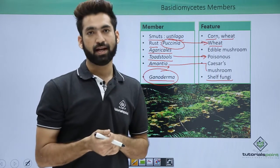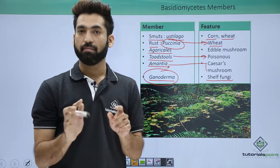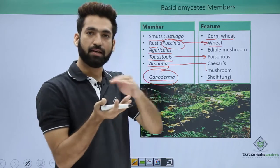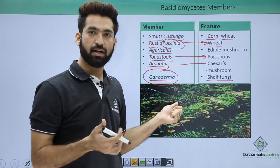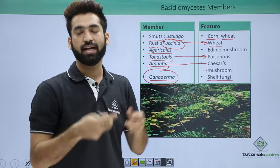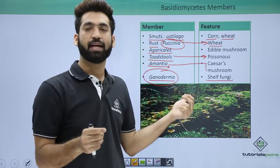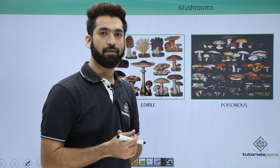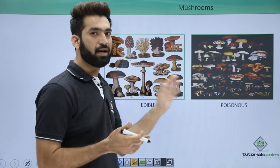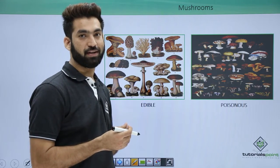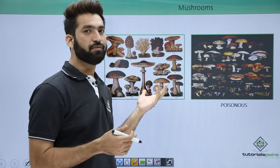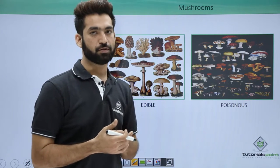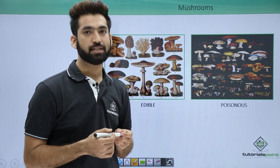Ganoderma can decompose lignin, which is a component of wood. Most bacteria and other fungi cannot degrade lignin, but Ganoderma can — even on standing trees, not just fallen wood. There are figures showing edible and poisonous fungi which look similar but differ in the poisons they produce, so care should be taken when consuming fungi. Most of what we eat belongs to Agaricales, while most poisonous fungi are toadstools. In the next session we will cover the last class of fungi: Deuteromycetes.